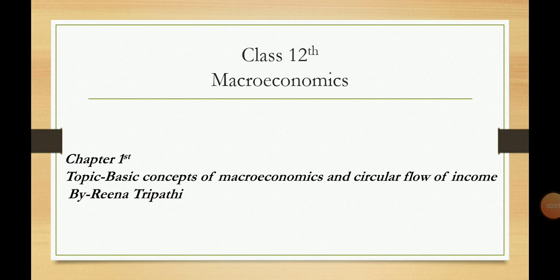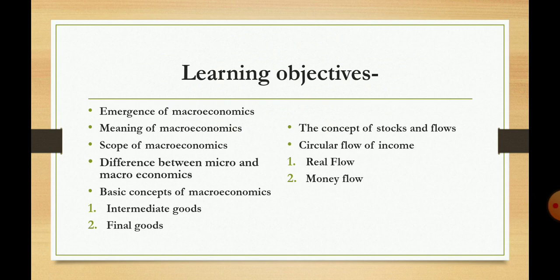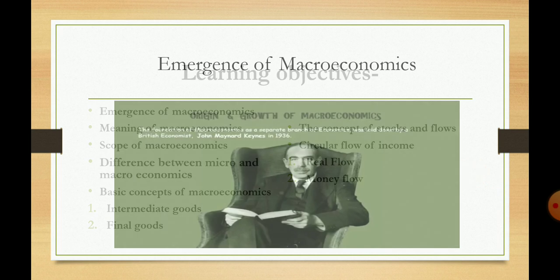Good morning students. Today we are going to start the chapter. The first topic is basic concepts of macroeconomics and circular flow of income. Learning objectives: we are going to learn the following topics — emergence of macroeconomics, meaning of macroeconomics, scope of macroeconomics, difference between micro and macroeconomics, basic concepts of macroeconomics including intermediate goods, final goods, the concept of stock and flow, circular flow of income, real flow and money flow.